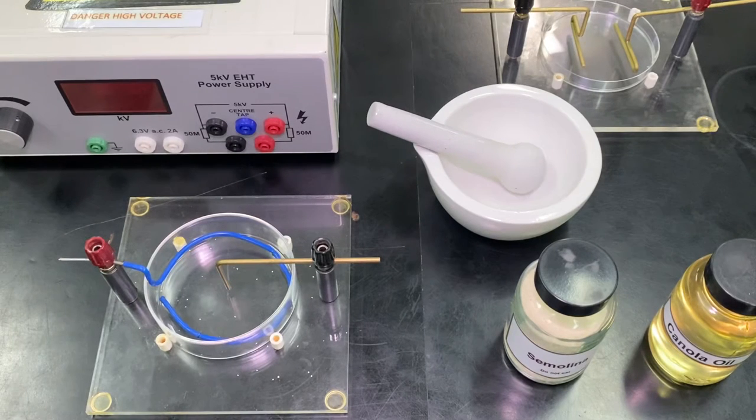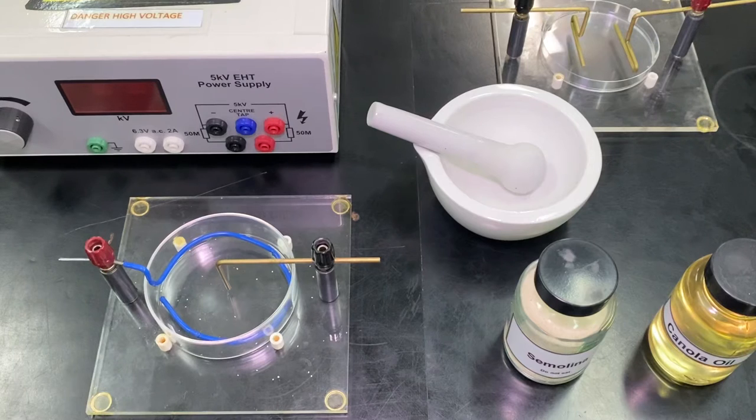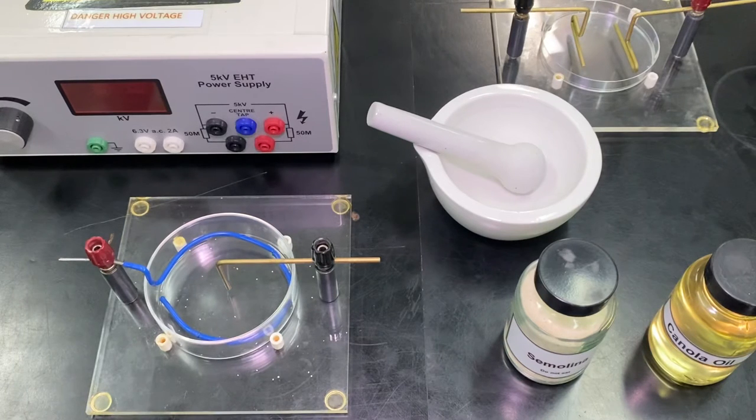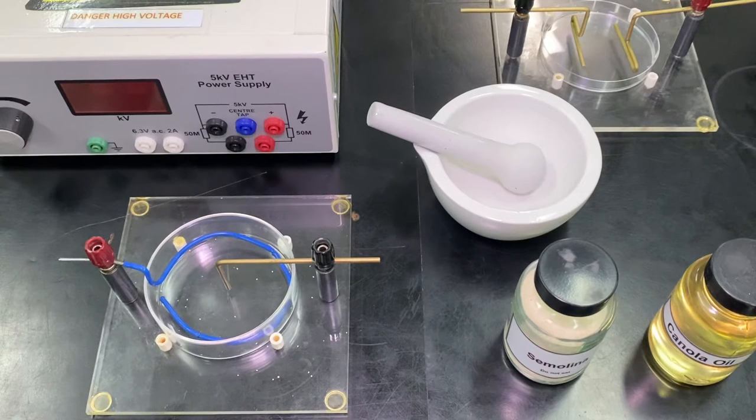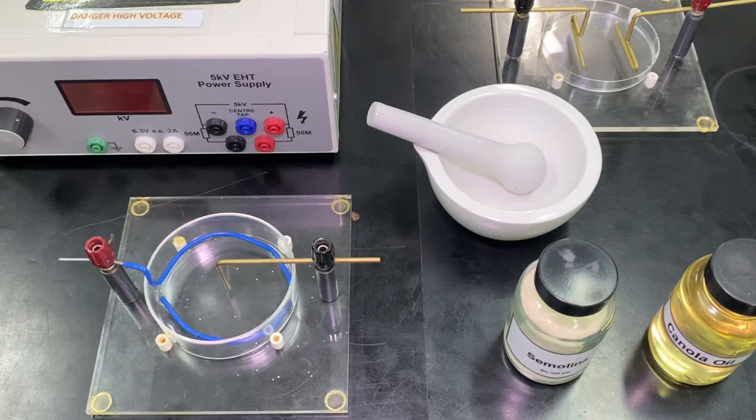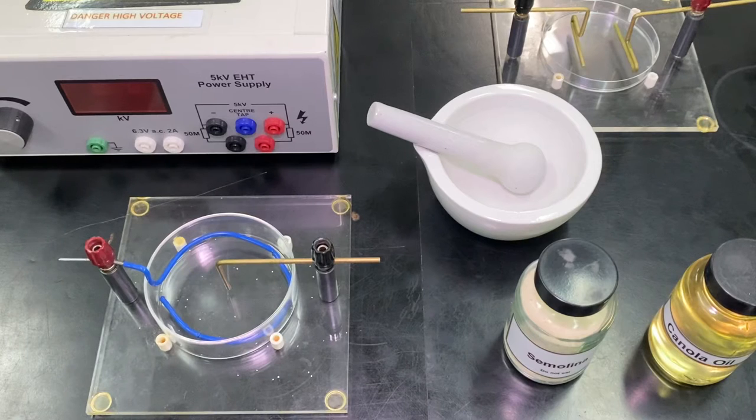As we know, magnetic field patterns can be shown quite nicely. We can plot them using a plotting compass, we can plot the magnetic field around a bar magnet, or we can show them very quickly using iron filings.